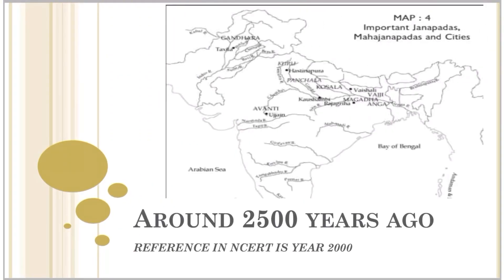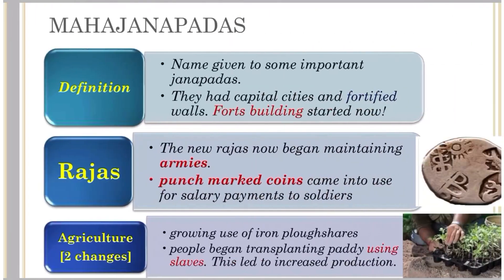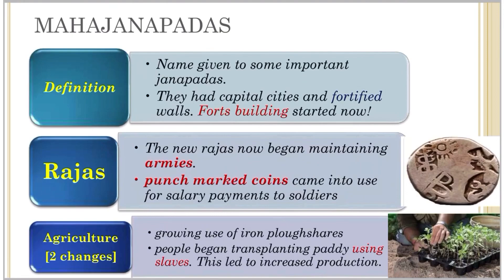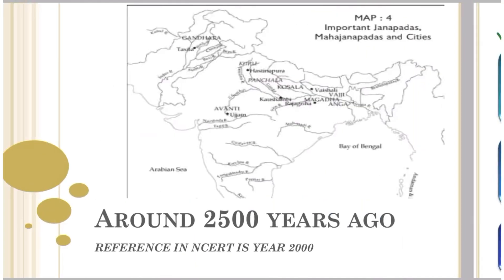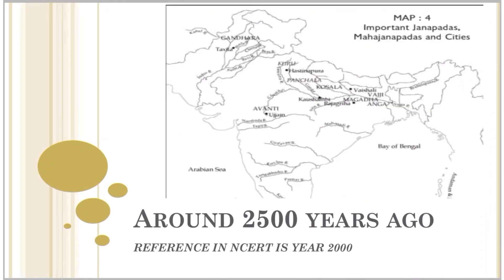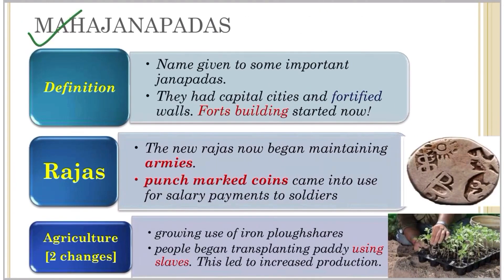Now we will study the period of around 2500 years ago. About 2500 years ago some Janapadas became more important than others and were known as Mahajanapadas. Some important Mahajanapadas shown on the map include Magadha, Kosala, Panchala, and Gandhara. These were the important Mahajanapadas that emerged around that period.